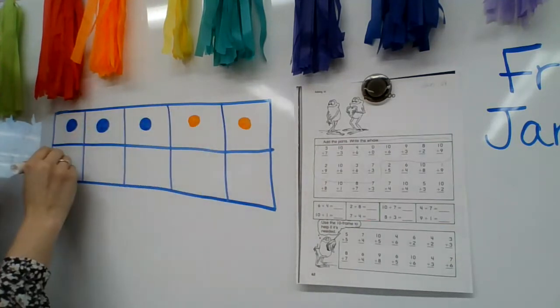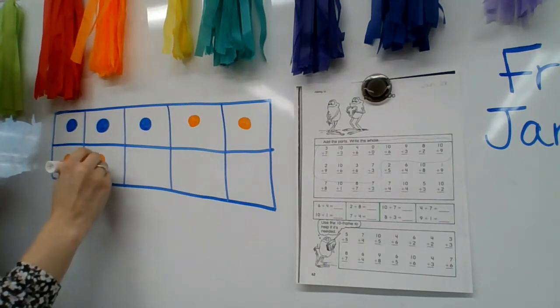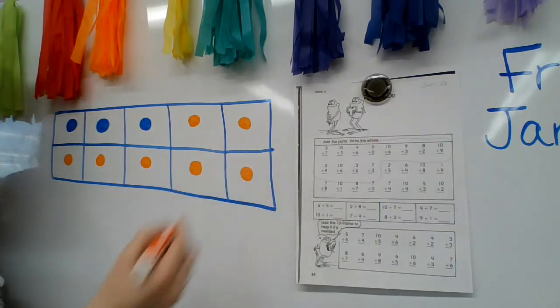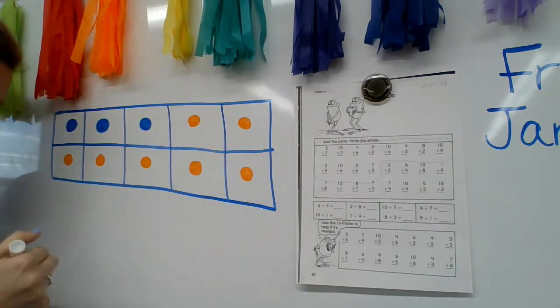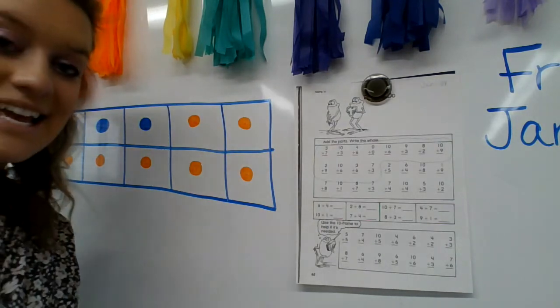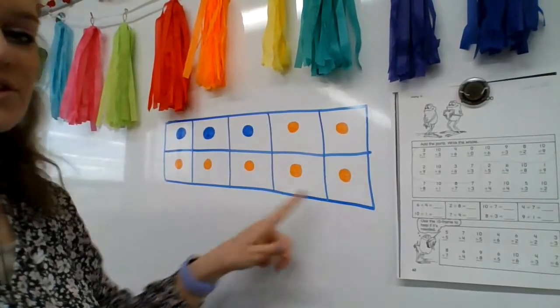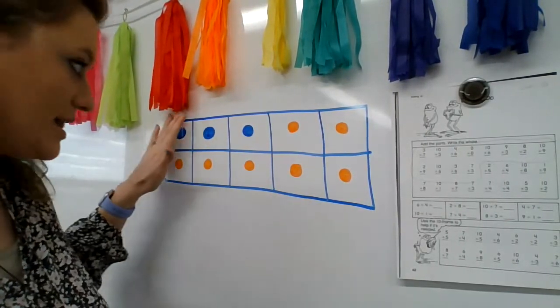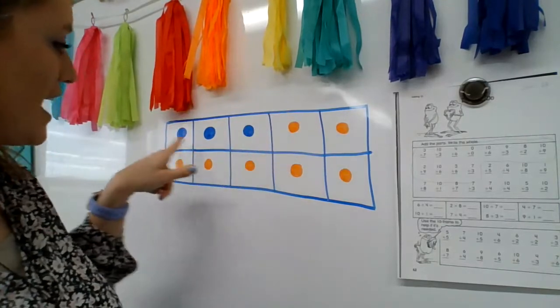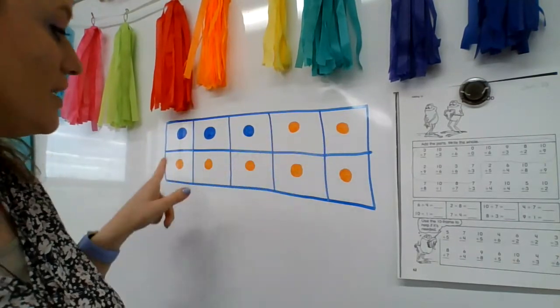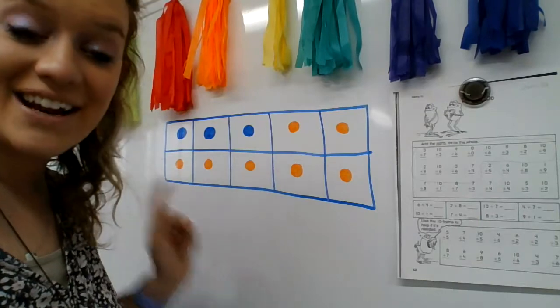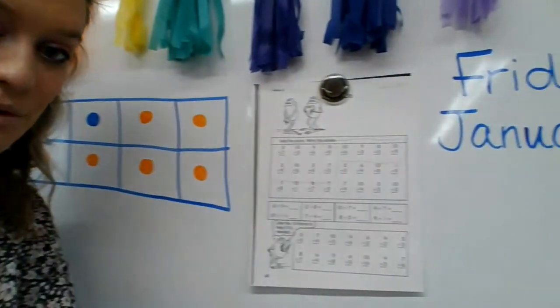I added seven. So let's see how many that will give us all together. One, two, three, four, five, six, seven. Wait, I filled up every box. How many boxes did I say there was? What was this called? This is called a 10 frame. So how many boxes are in my 10 frame? 10 frame means there's 10 boxes. So if I had three blue dots and I added seven orange dots and I filled up the whole 10 frame, what does that equal? 10. Good. That is something we're really going to keep working on is that 10 frame.